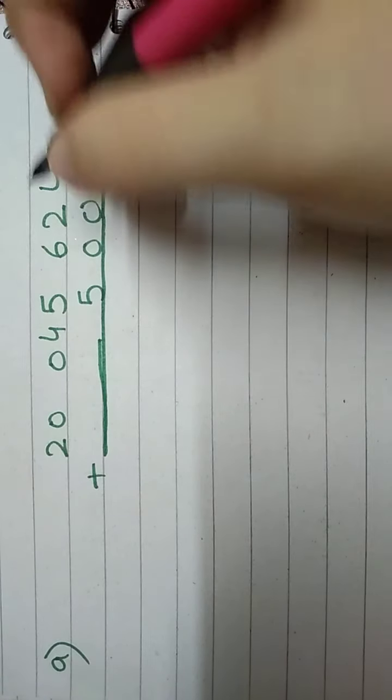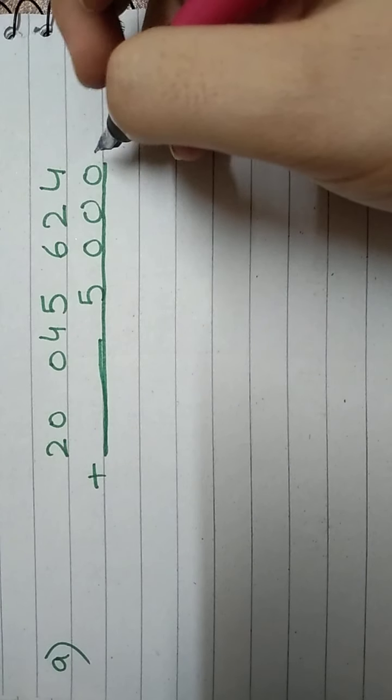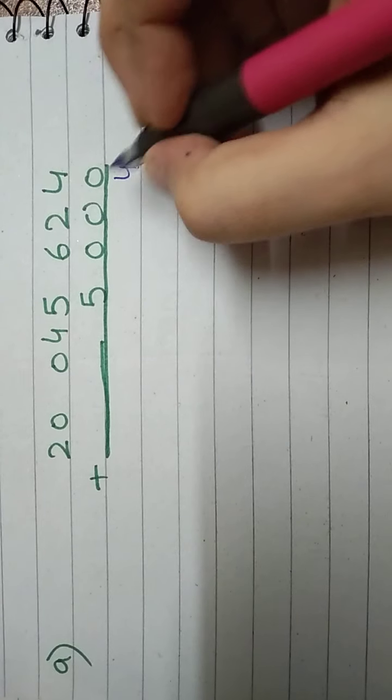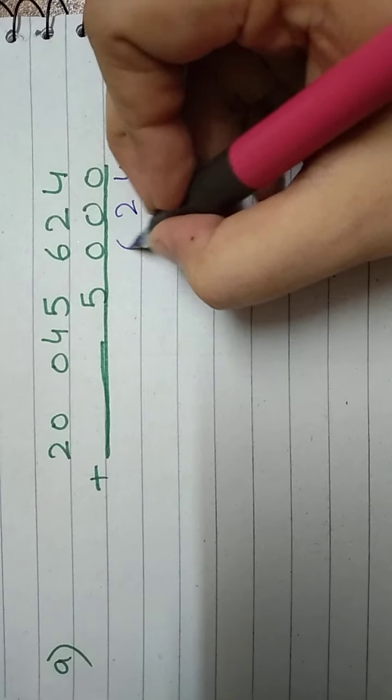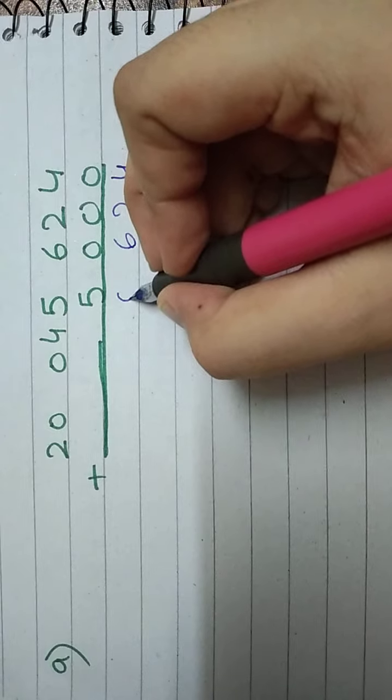Let's start from the units side. We have 2 plus 0, we have 2. 6 plus 0, we have 6. Then 5 plus 5, we have 10.